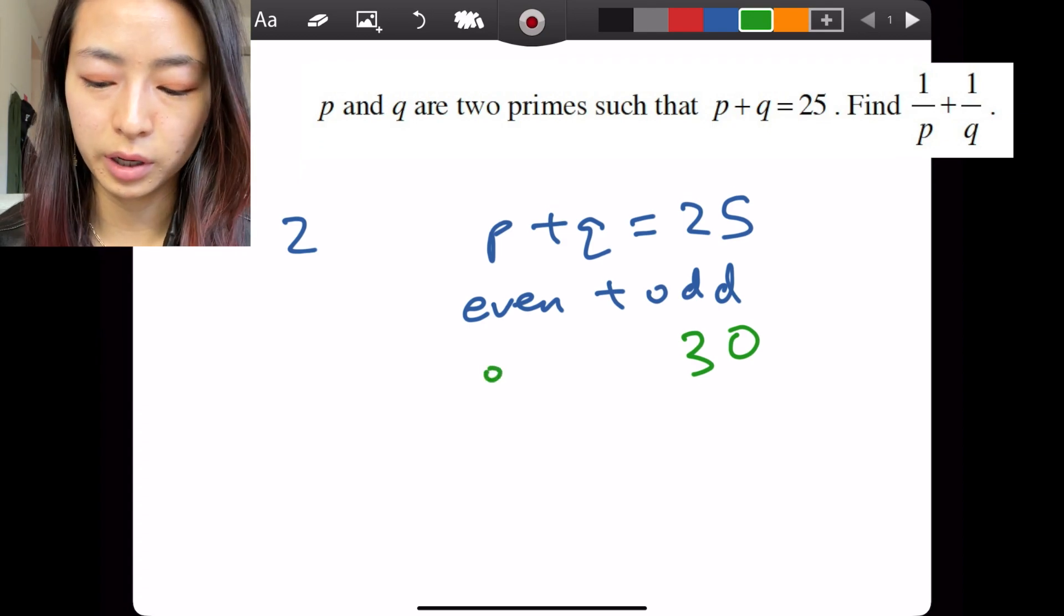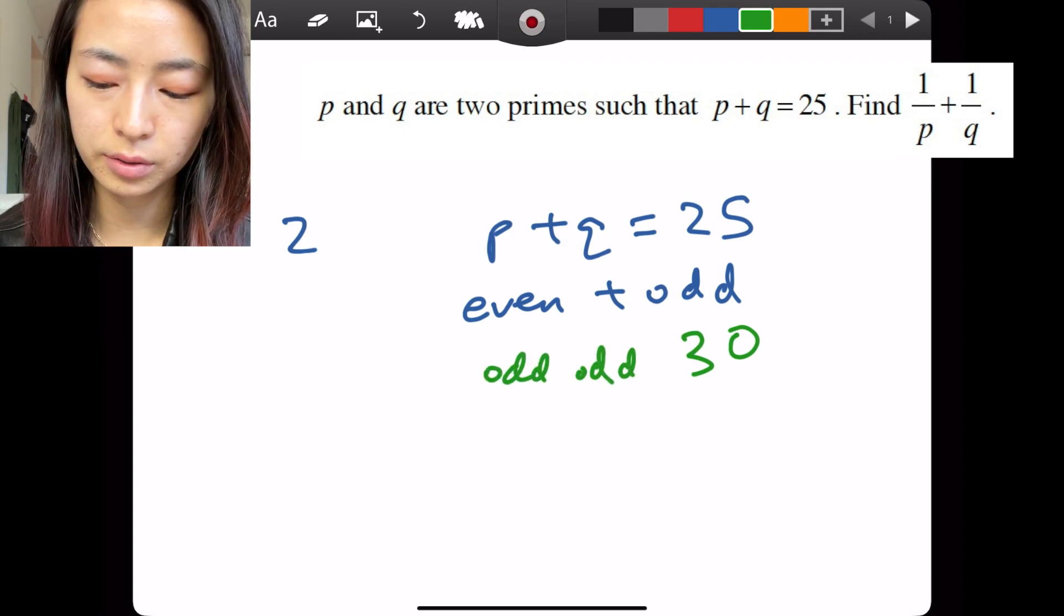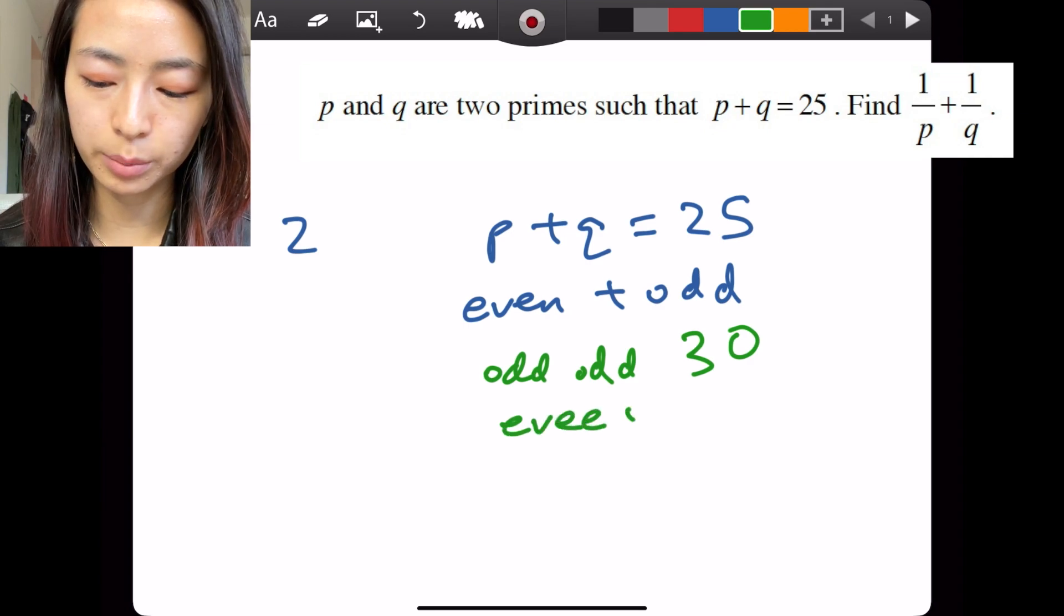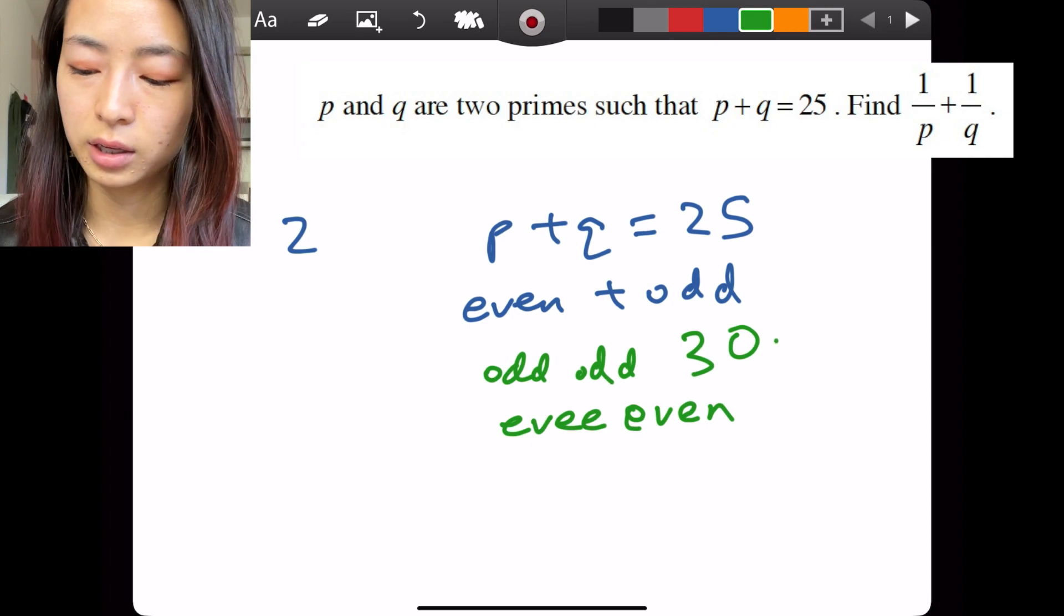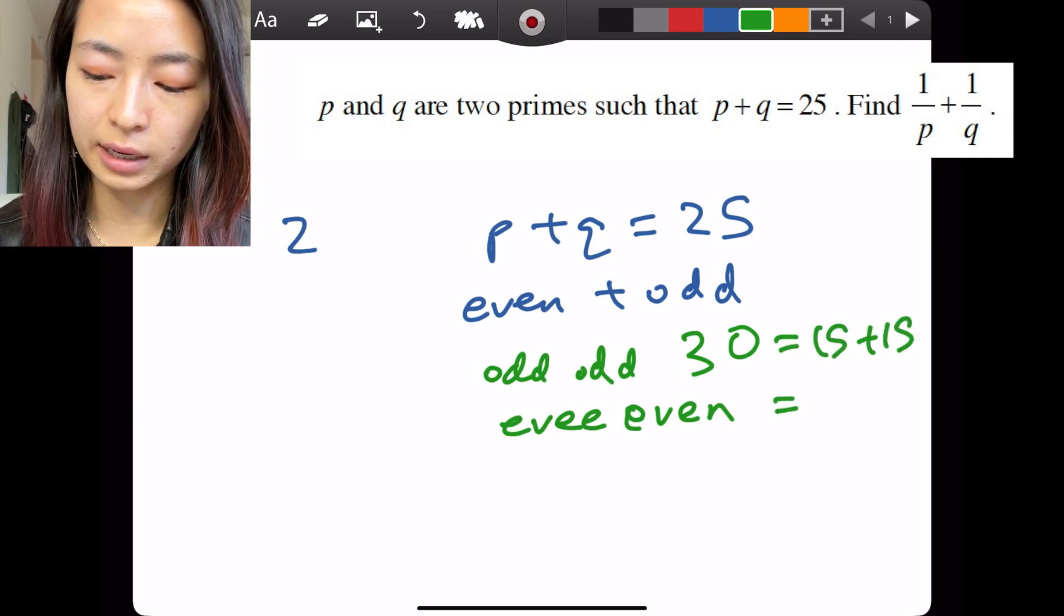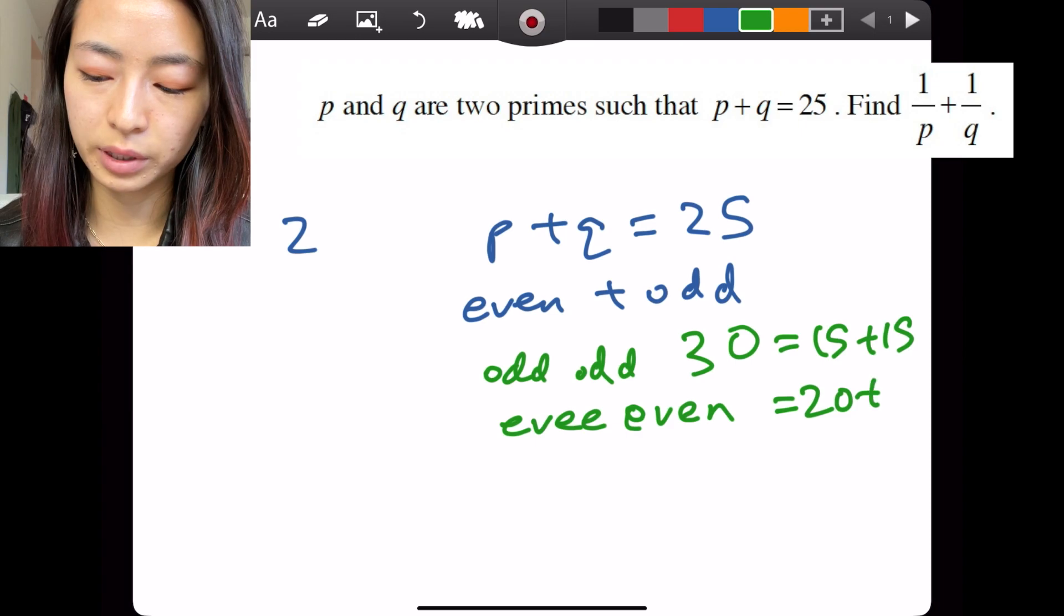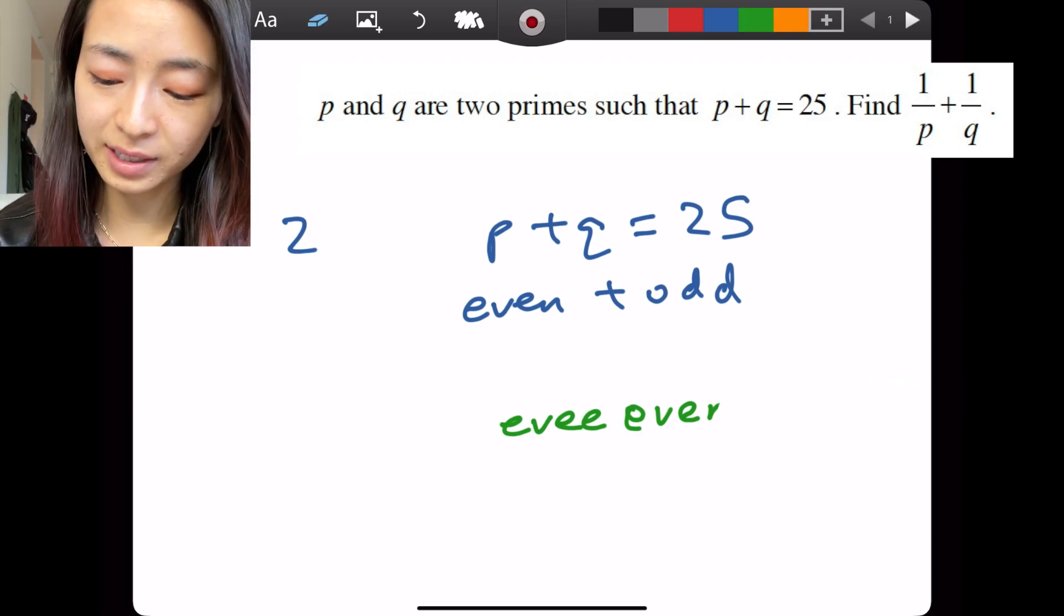Because if the sum was an even number, that could be the sum of two odds or two even numbers, right? And you can use small cases to look at that. 30 could be 15 plus 15 and it could also be 20 plus 10. This way, it's easy.